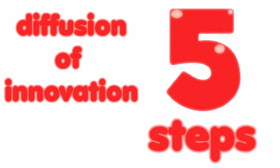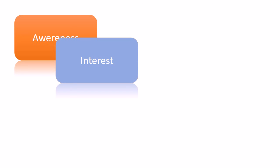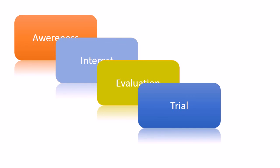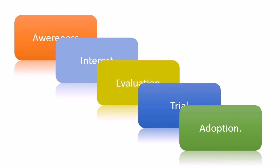The diffusion of innovation occurs through a five-step process. Awareness: the individual is simply aware the innovation exists. Interest: the individual wants more information and begins to wonder if the innovation can help them. Evaluation: the individual mentally examines the innovation using the information gathered, trying to determine whether it will really impact their work. Trial: the individual actually tests the innovation to see if reality matches expectations. Adoption: the individual likes the innovation and adopts it.